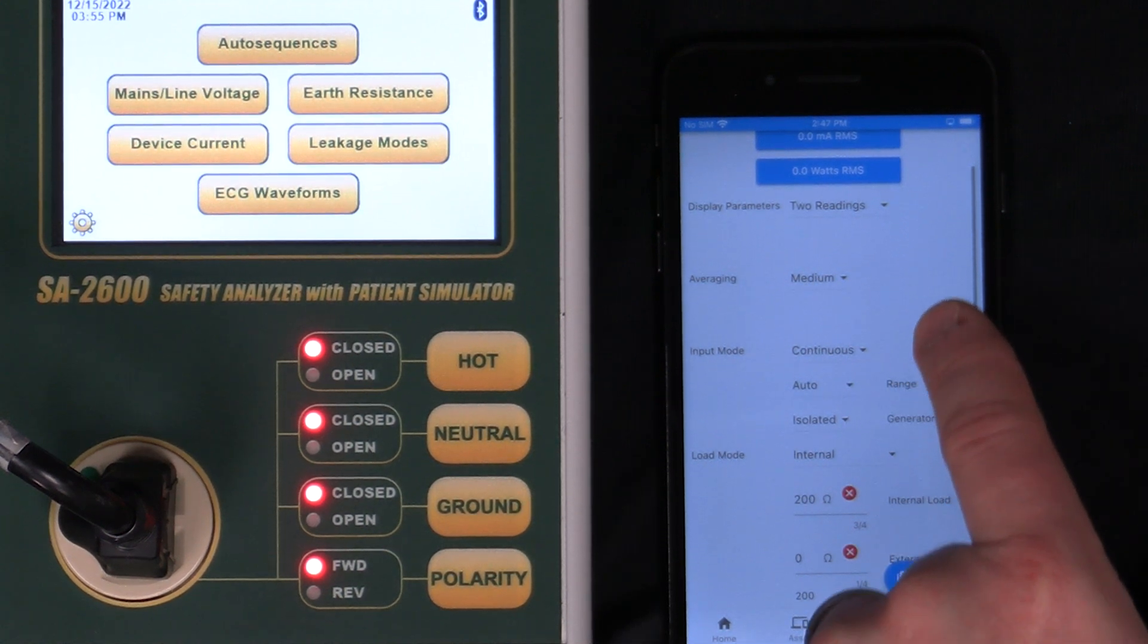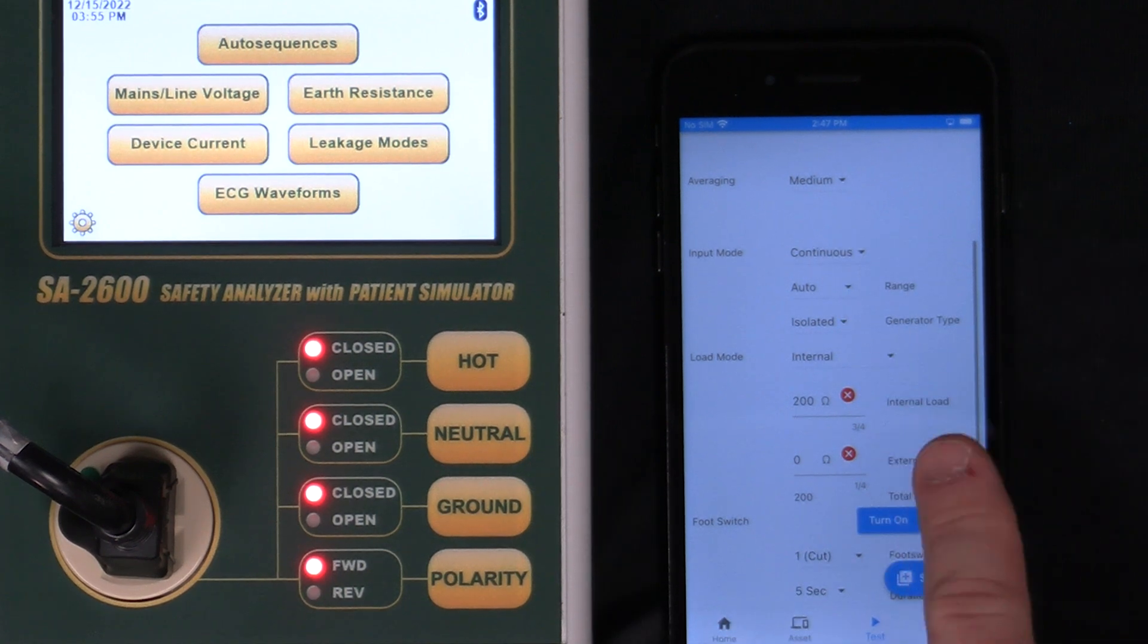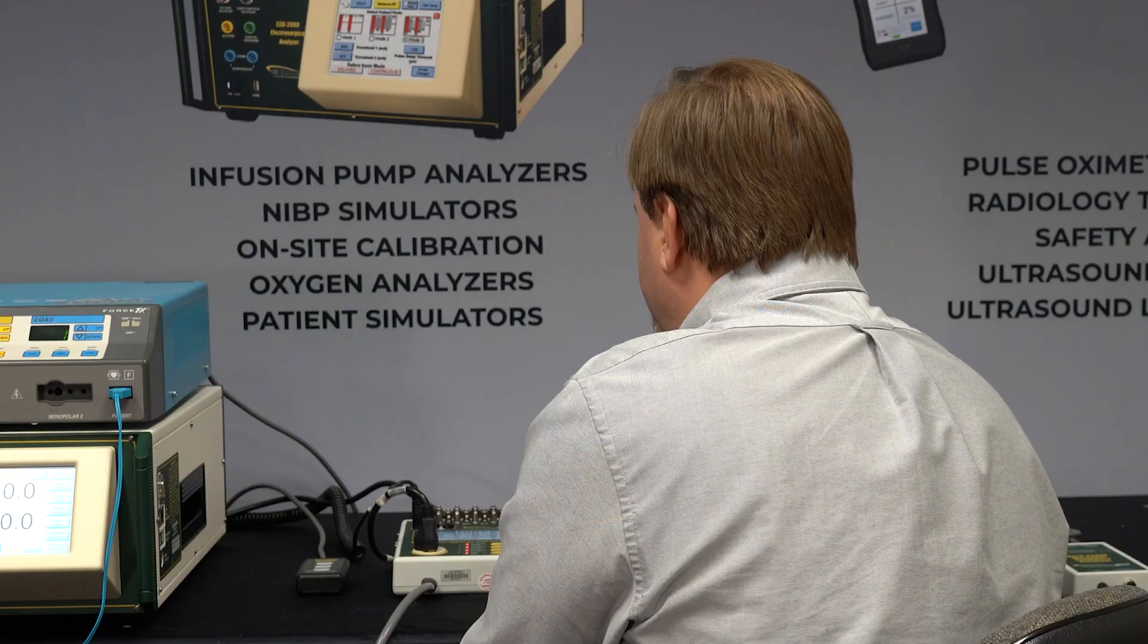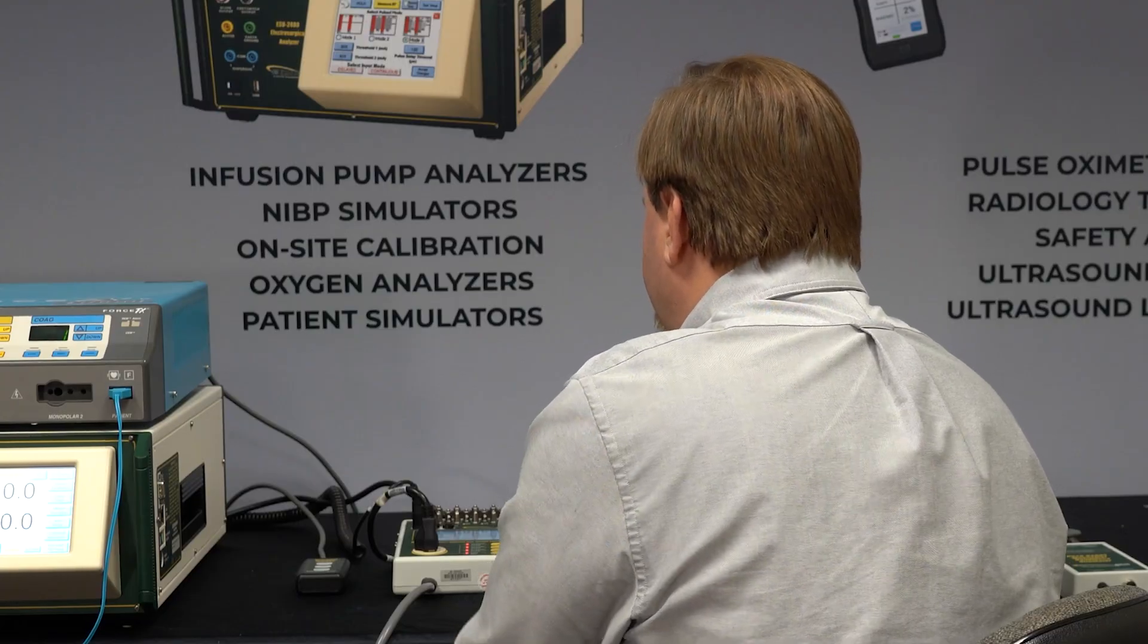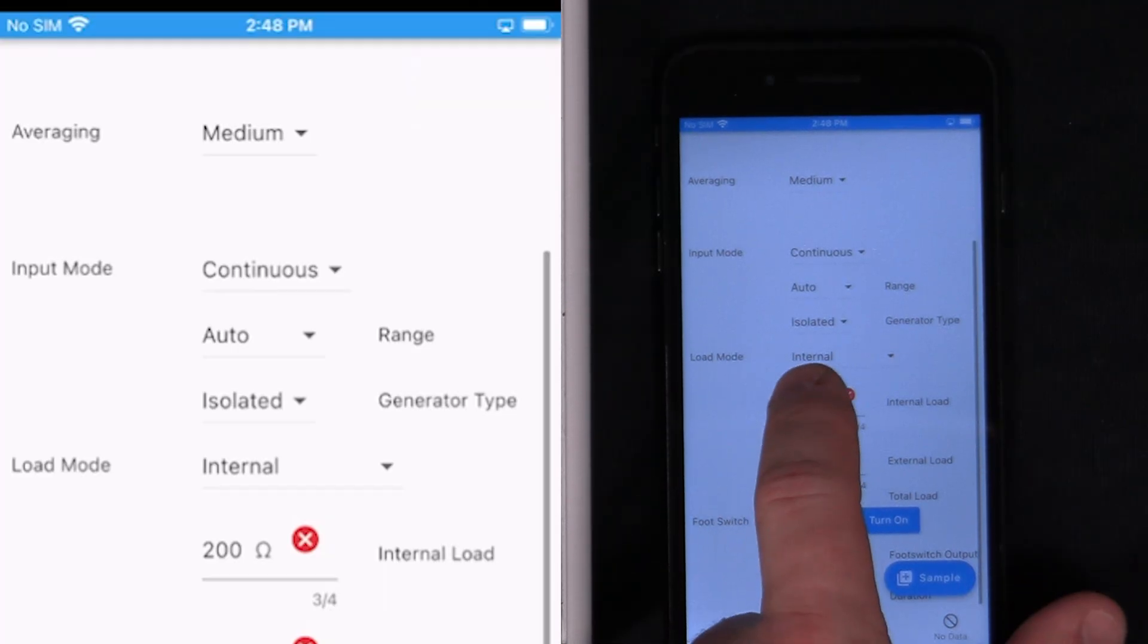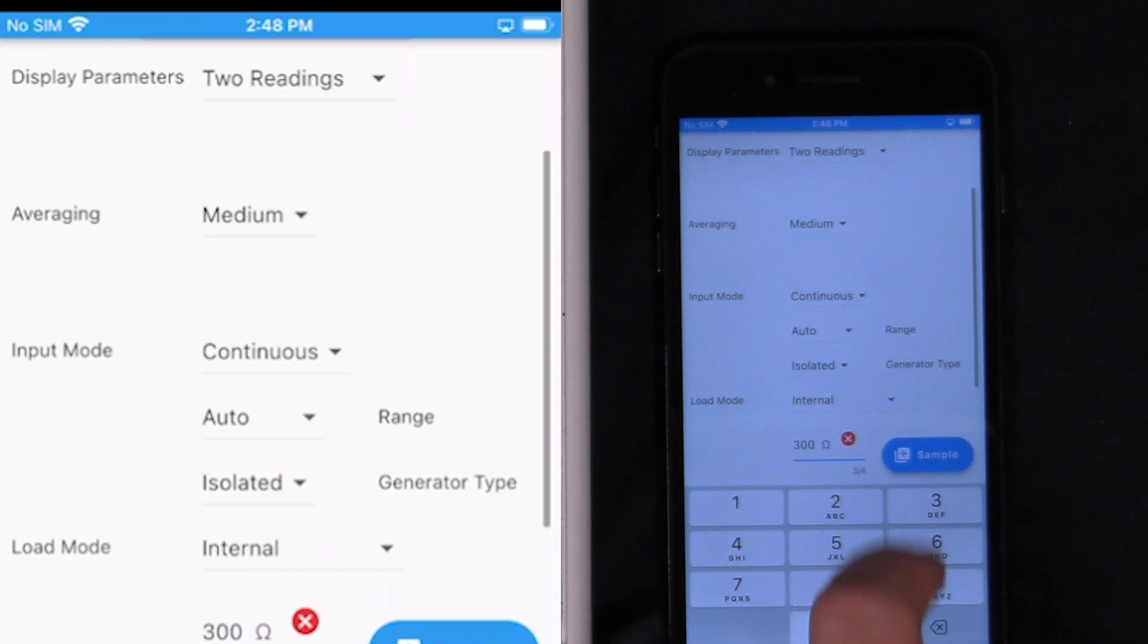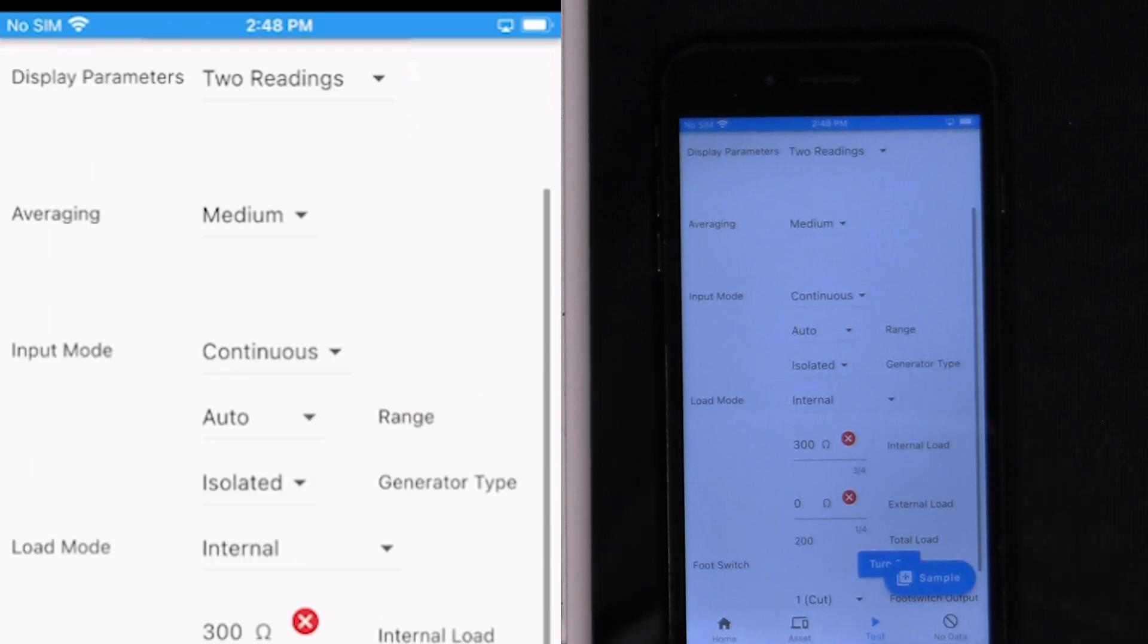We can pick the averaging modes, all of the input modes whether it's continuous or a pulsed waveform, whether it's isolated or ground referenced and what load that we want. Let's say that we want a 300 ohm load. I can clear that here, press 300 and now the ESU 2400 load bank has been updated to 300 ohms.